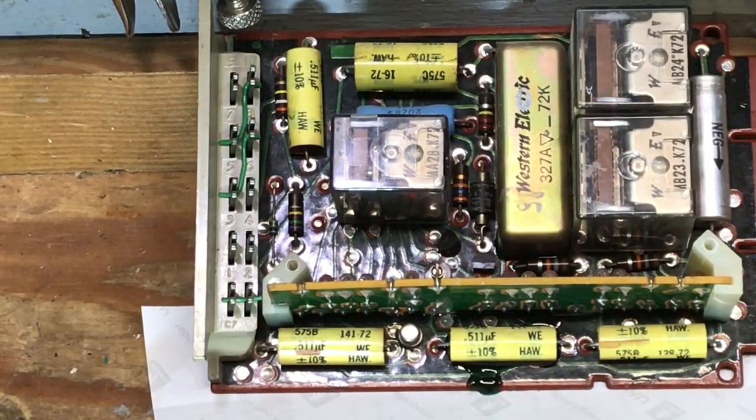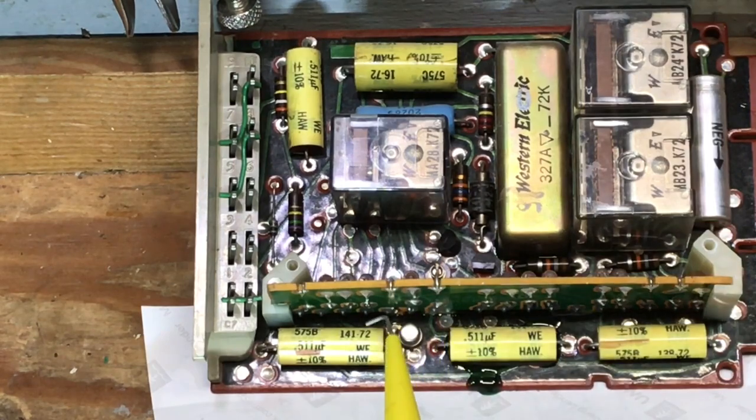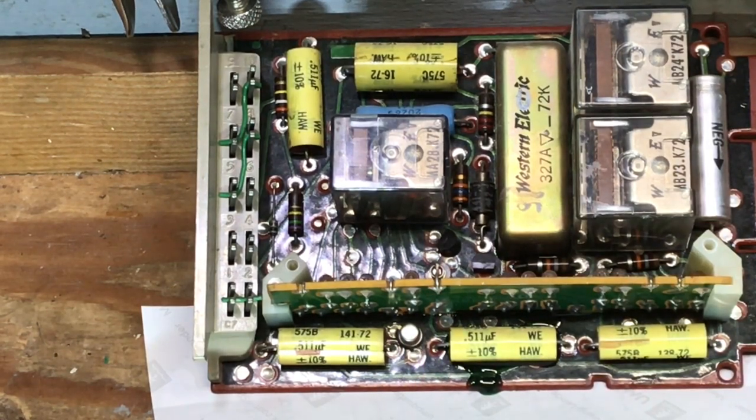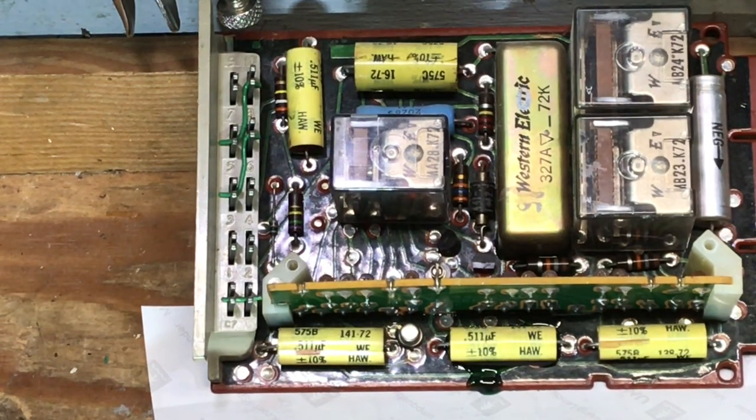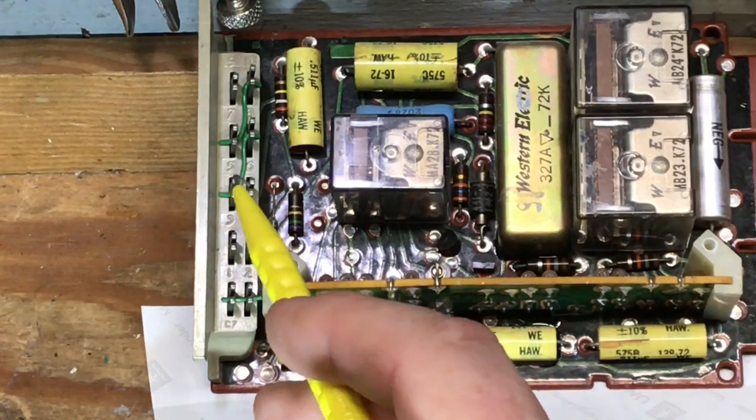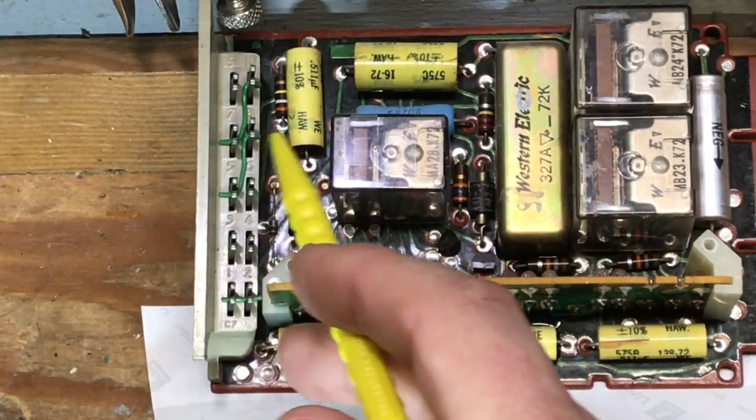The terminal number eight is what is connected to the ringer or buzzer inside of the telephone set. In this particular case, we have interrupted ringing coming in on option five, or terminal five, and it is jumpered to terminal eight. So we got five, six, seven, and eight.